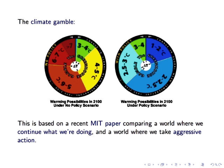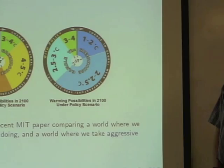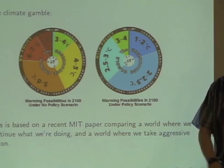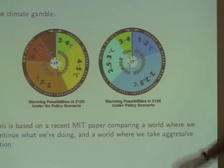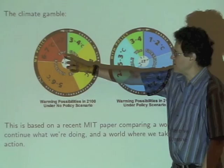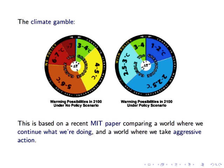And so one nice summary is this climate gamble prepared by MIT. The idea is you spin the spinner and it lands with different probabilities in different regions that say how much warming we should expect by 2100. If we don't do anything other than what we're doing now, if we just march along spewing carbon dioxide into the air, the gamble looks like that. We've got a little chance of getting three to four degrees Celsius warming, bigger chance of getting four to five, equally big chance to get five to six, scarily high chance of getting six to seven and even more than seven degrees Celsius.